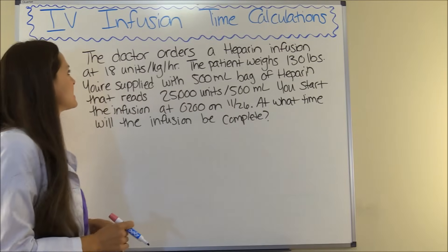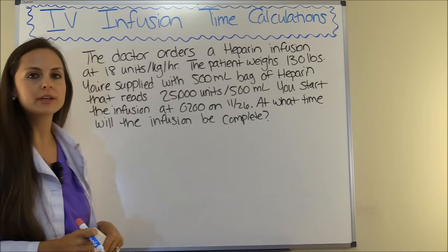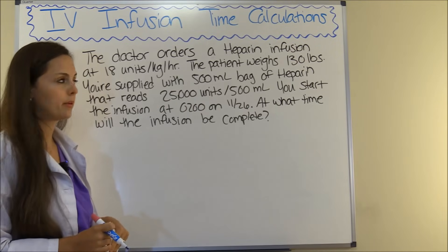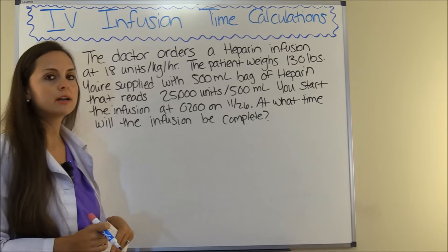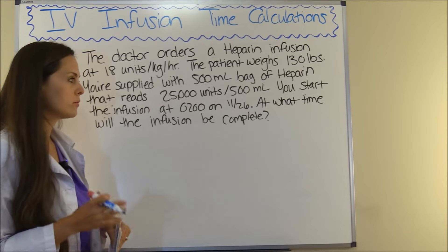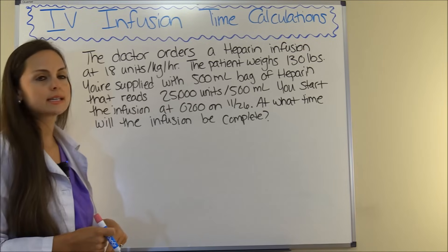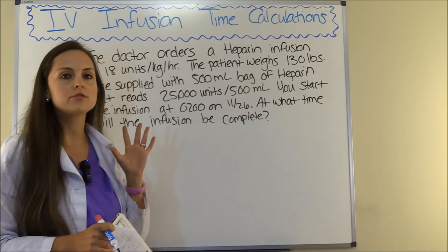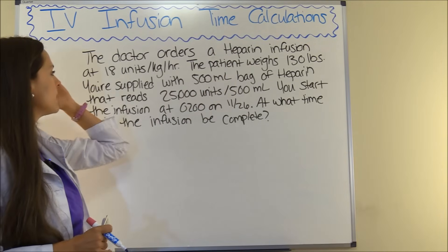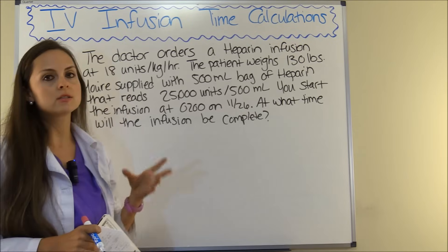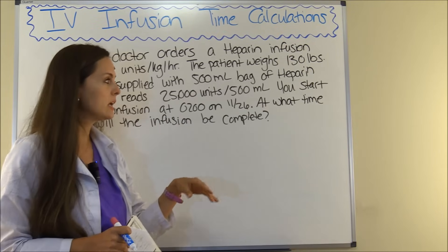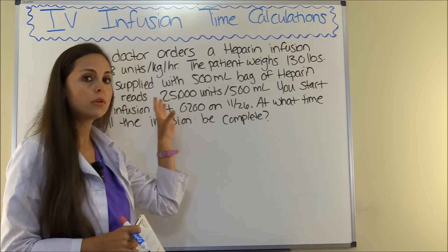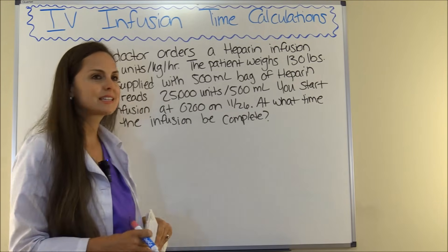Now let's look at our next problem. The doctor orders a heparin infusion at 18 units per kilogram per hour. The patient weighs 130 pounds. You're supplied with a 500-milliliter bag of heparin that reads 25,000 units per 500 milliliters. You start the infusion at 2 o'clock — 0200, that's 2 o'clock in the morning on November 26th. At what time will the infusion be complete? This is similar to our last problem: we'll convert the patient's weight to kilograms, calculate the rate, then figure out what time the infusion ends from our 0200 start.